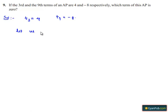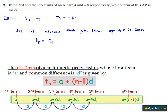Let us assume that some pth term of AP is 0. Therefore, tp = a plus (p minus 1) into d is equal to 0. So we can say that a plus (p minus 1) into d is equal to 0.